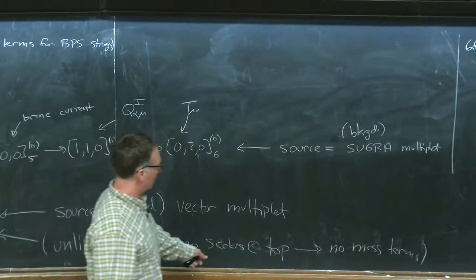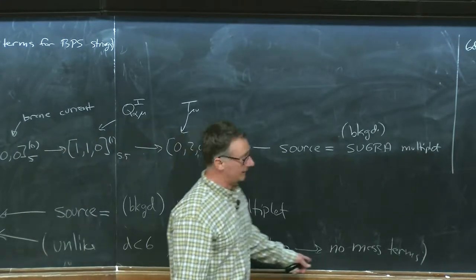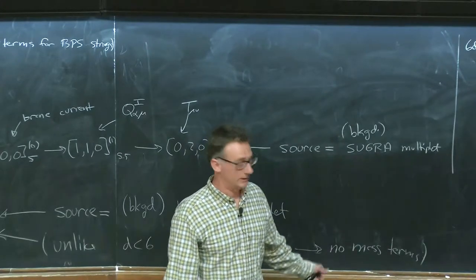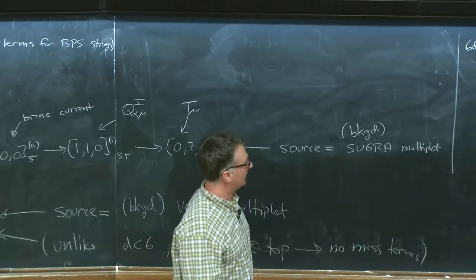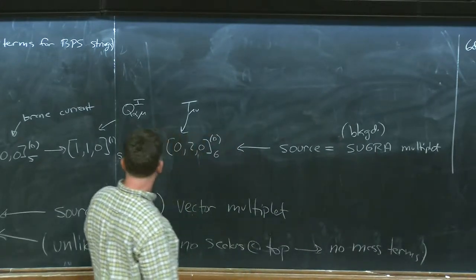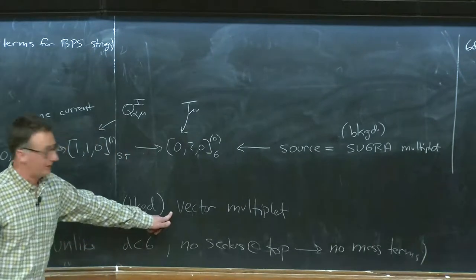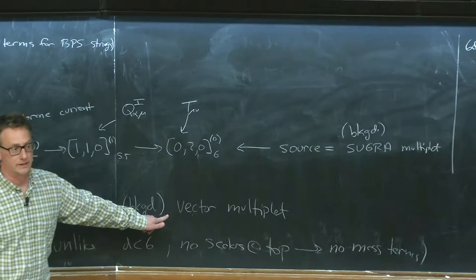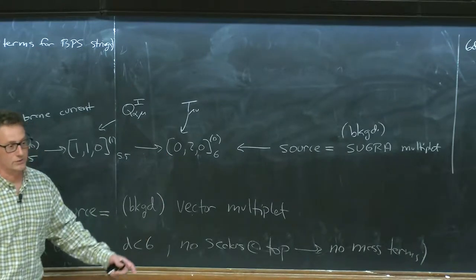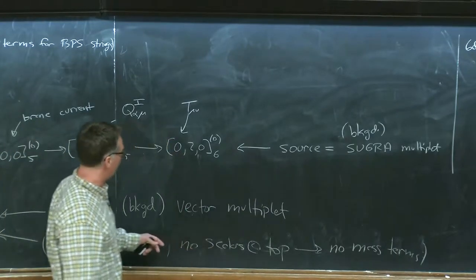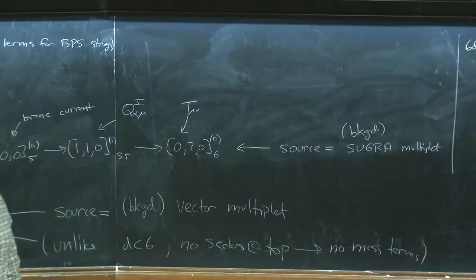In fact there are no relevant operators in six dimensions — I mentioned this in the last lecture — and this is an example of that. In 5D, 4D, and 3D there are mass terms associated with global currents, but not in six dimensions. When we want to add a source for the flavor current operators, those sources are background vector multiplets, just as the source for the stress tensor multiplet is the supergravity multiplet.